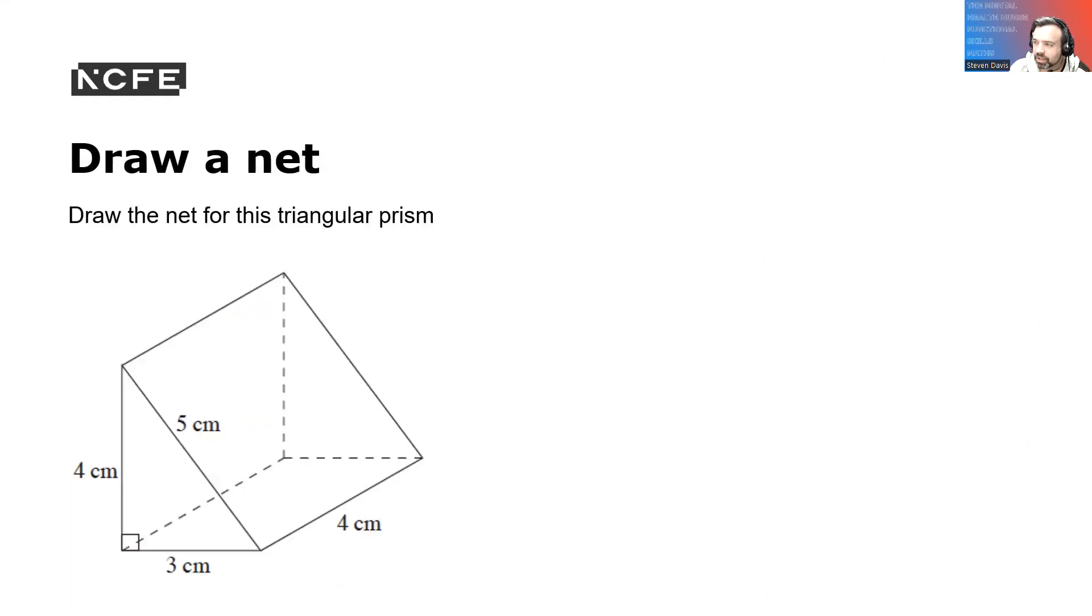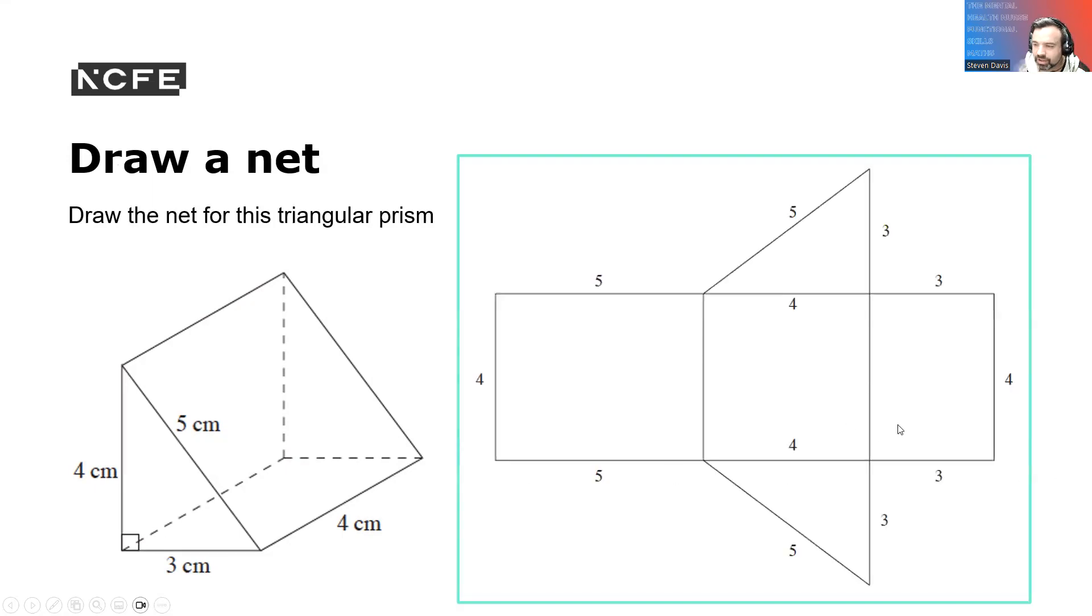So they're drawn out. So draw a net. To draw a net from this triangular prism, you need to know these figures. Here you can then draw that out. You can see that you've got your base there, which is your four by four. You've got your sides there. So that's your five centimeters by your three by your four. So three, five and four. And then again, you've got your four and five.